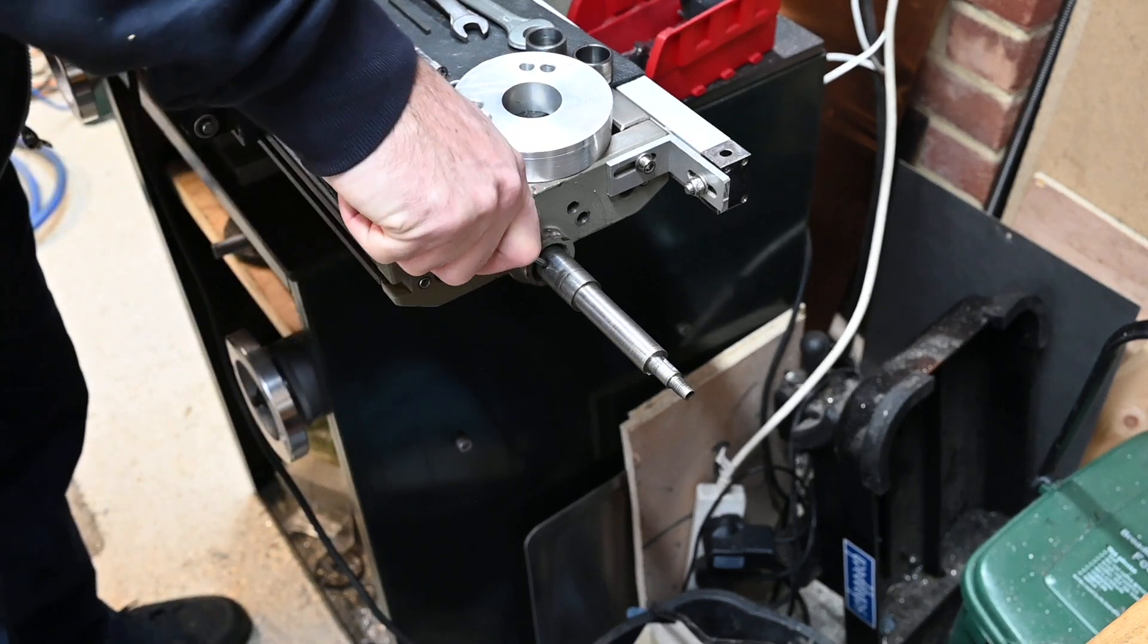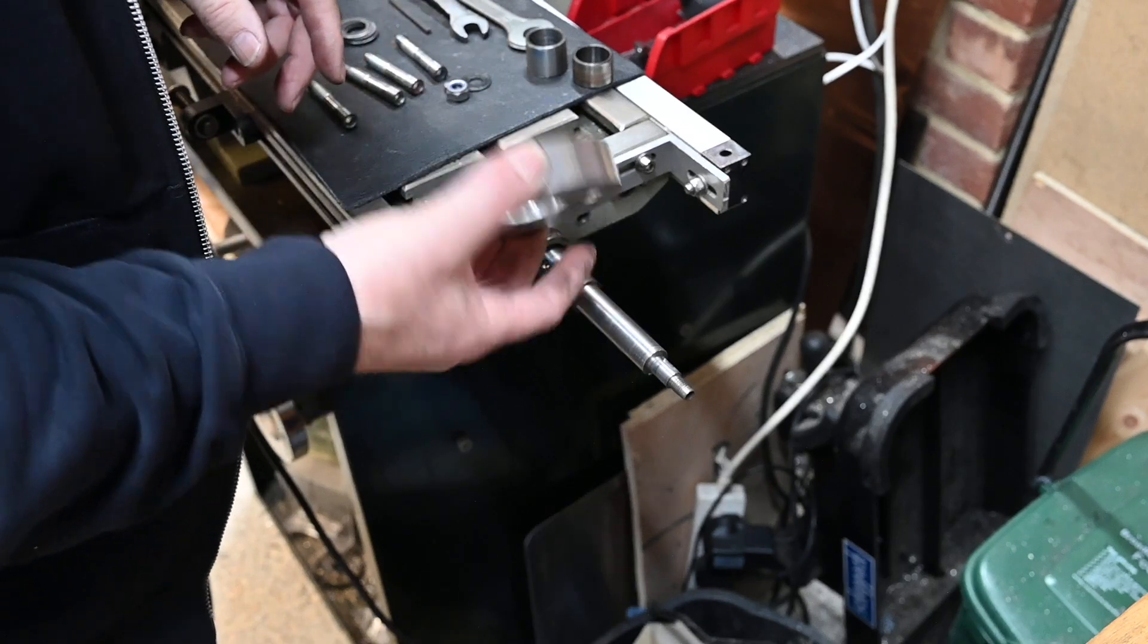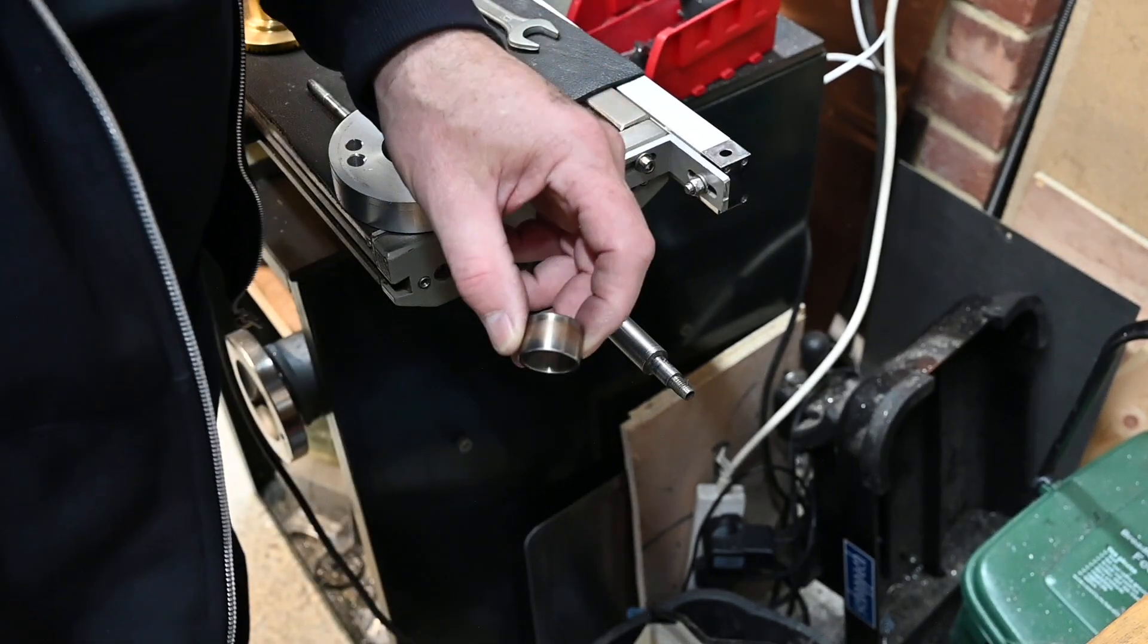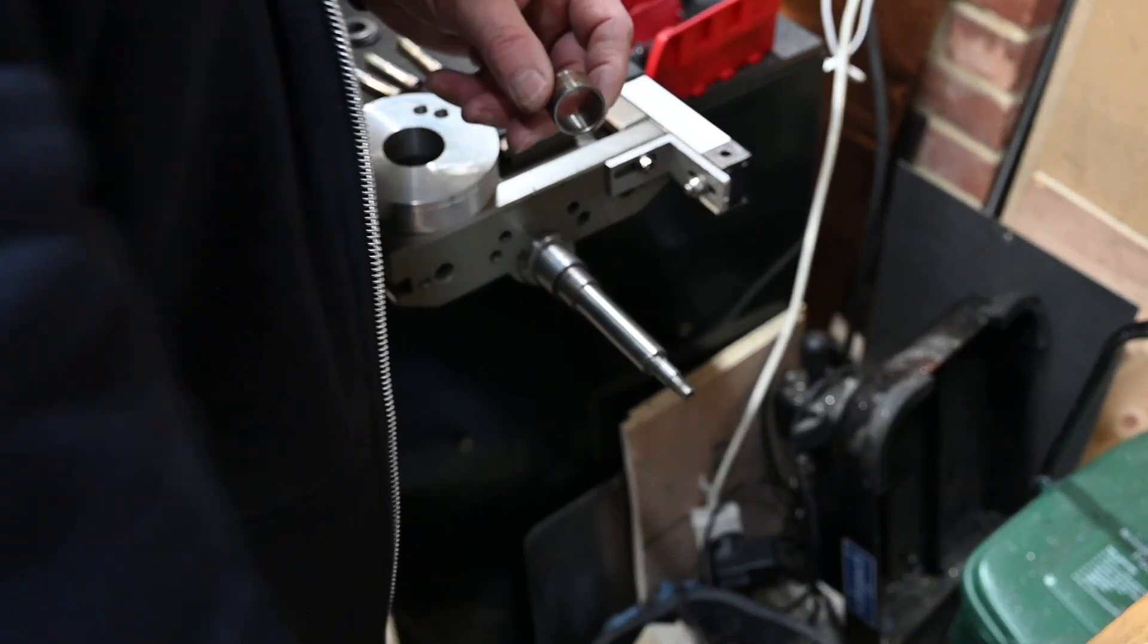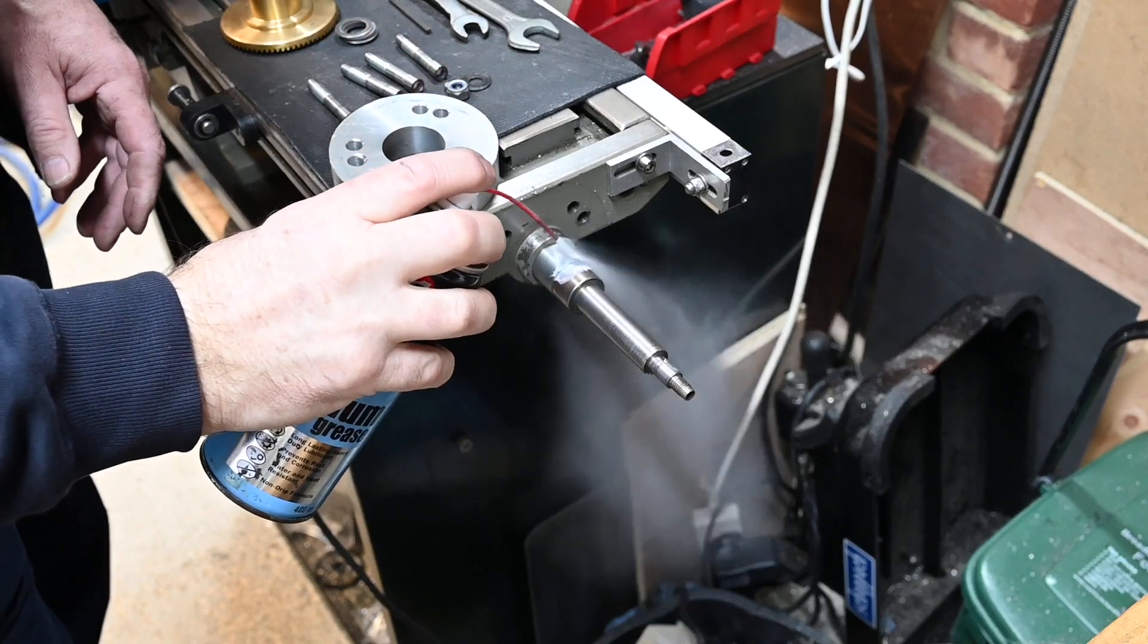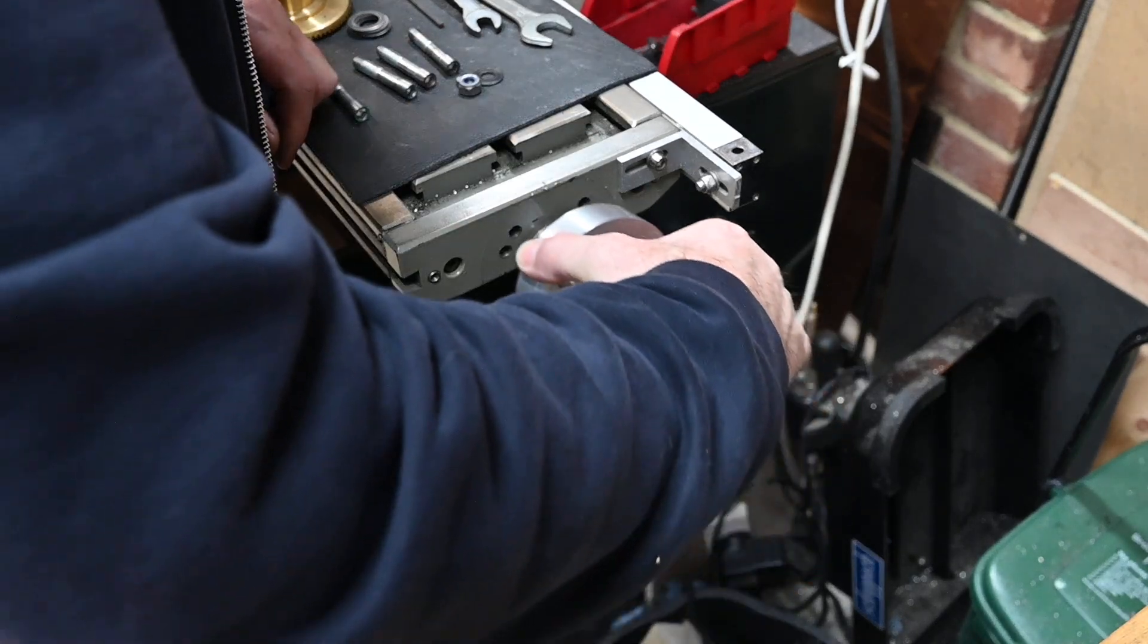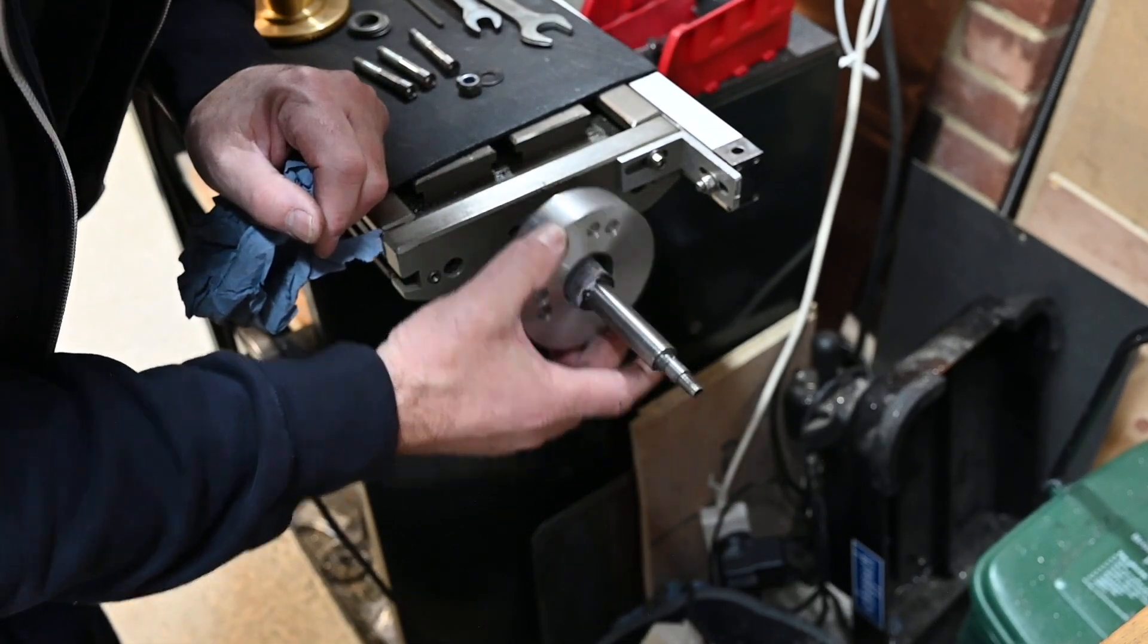Tighten down the grub screw, put the spacer on. You put these two on first. This one is the one that sits in the roller bearing. I'm going to just squirt a little bit of lithium grease on that and also on the bearing.